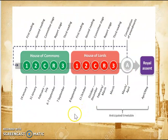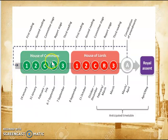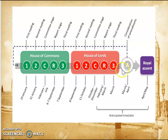To end this video, here is another diagram representing the process. For a bill to become an act, it usually starts in the House of Commons with first reading, second reading, committee stage, report stage, and third reading. It then does the same process in the House of Lords, before being given the royal assent and becoming an act of parliament.